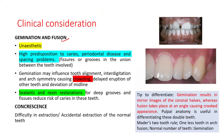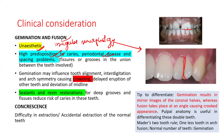Clinical implications for gemination and fusion include that these teeth are unaesthetic due to irregular morphology — having a large fused tooth in the anterior segment does not give a good appearance. There is also a high predisposition to caries and periodontal disease, because these teeth have notches, fissures, and grooves that are very susceptible to caries. If the grooves extend sub-gingivally, plaque accumulation can give rise to periodontal disease.